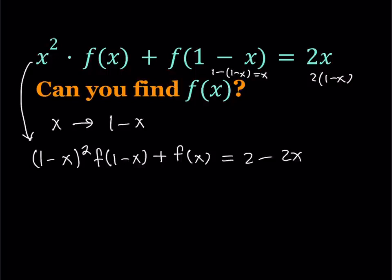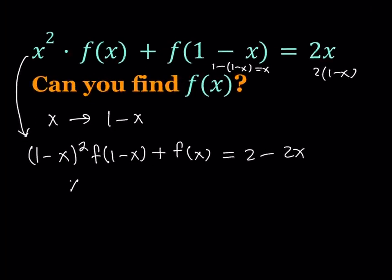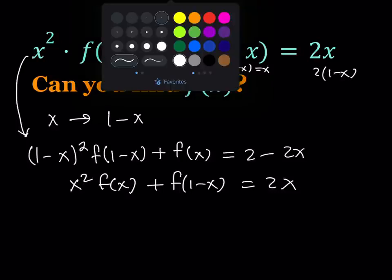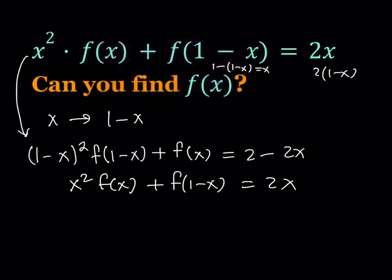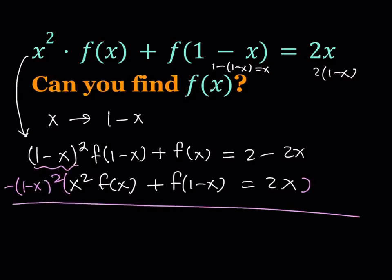So what I can do is I can just copy this first one, the original equation here, x squared times f of x plus f of 1 minus x equals 2x. Now, my goal is to find f of x, so why don't we just eliminate what we don't want? In this case, it will be f of 1 minus x. So I'll multiply both sides of the second equation by the opposite of this expression right here, which is the negative of 1 minus x quantity squared. And that should give me a nicer equation.